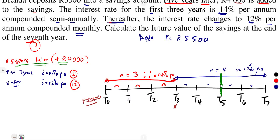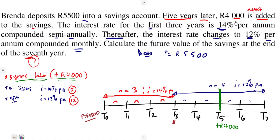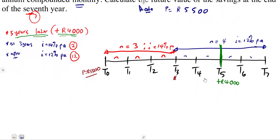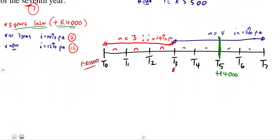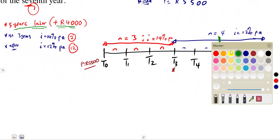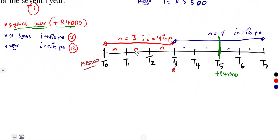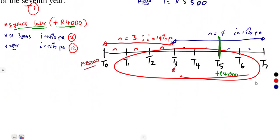At the fifth year — that is, 1, 2, 3, 4, 5 — there was a deposit of $4,000. So at year 5, a deposit of $4,000 was made. This is the $4,000 we are accounting for.